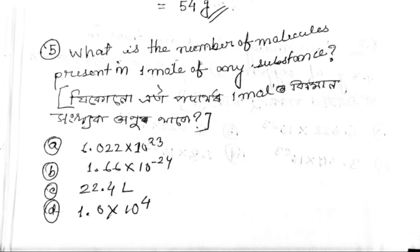Next: What is the number of molecules present in one mole of any substance? One mole contains 6.022 × 10²³ molecules.